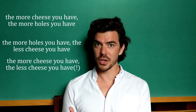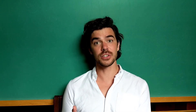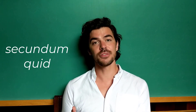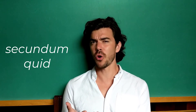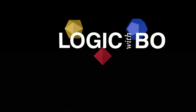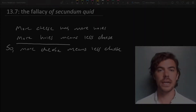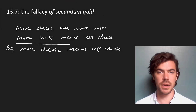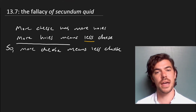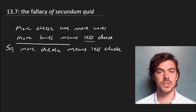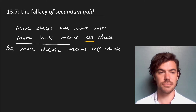Clearly, there's something going wrong here. This belongs to a family of fallacies called secundum quid, and in this video we're going to see how they work and what's going wrong with them. The problem with the argument is this word 'less,' because there are actually two kinds of less going on here, and they're being conflated.